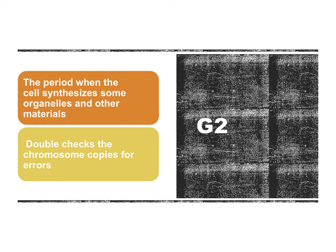The third stage of interphase is called G2. This is when the cell prepares for division of its nucleus. The cell takes inventory and makes sure it's ready for the next stage, which is mitosis. In order to get ready, the cell synthesizes some organelles and other materials, and also double checks the chromosome copies for any sort of errors.